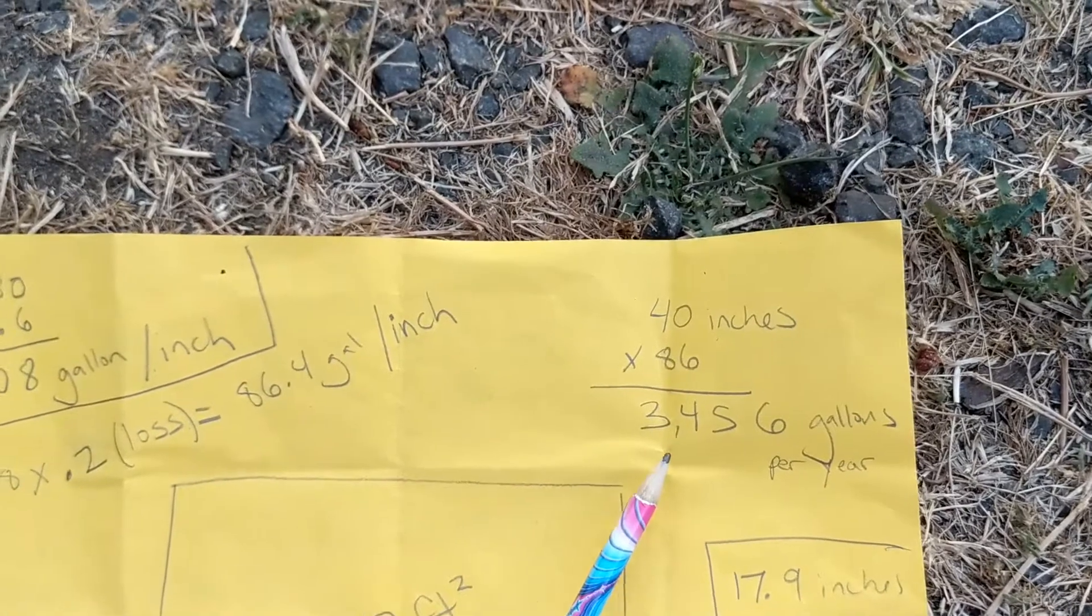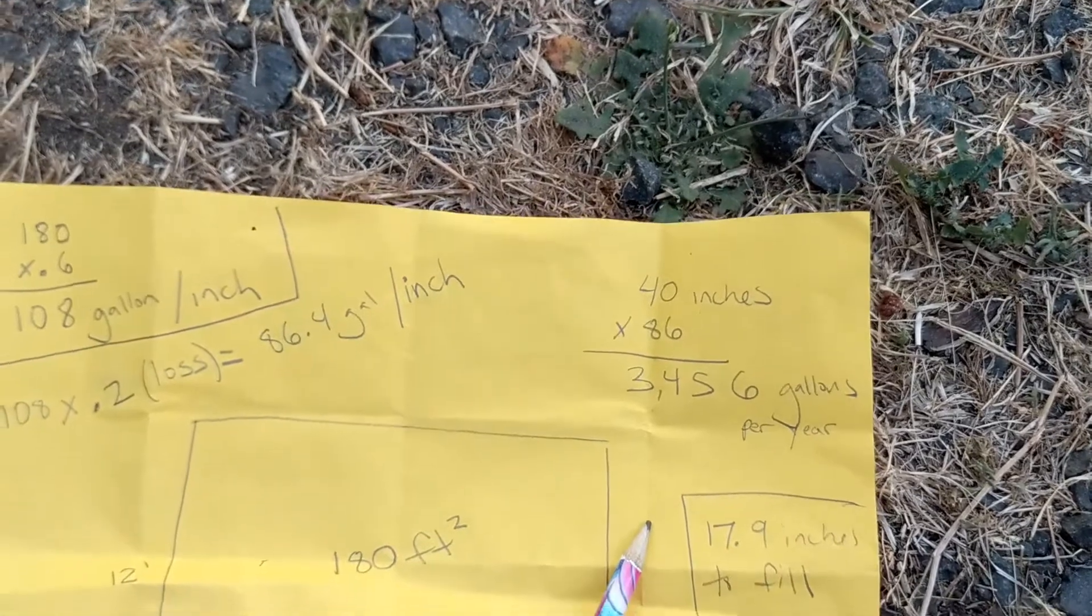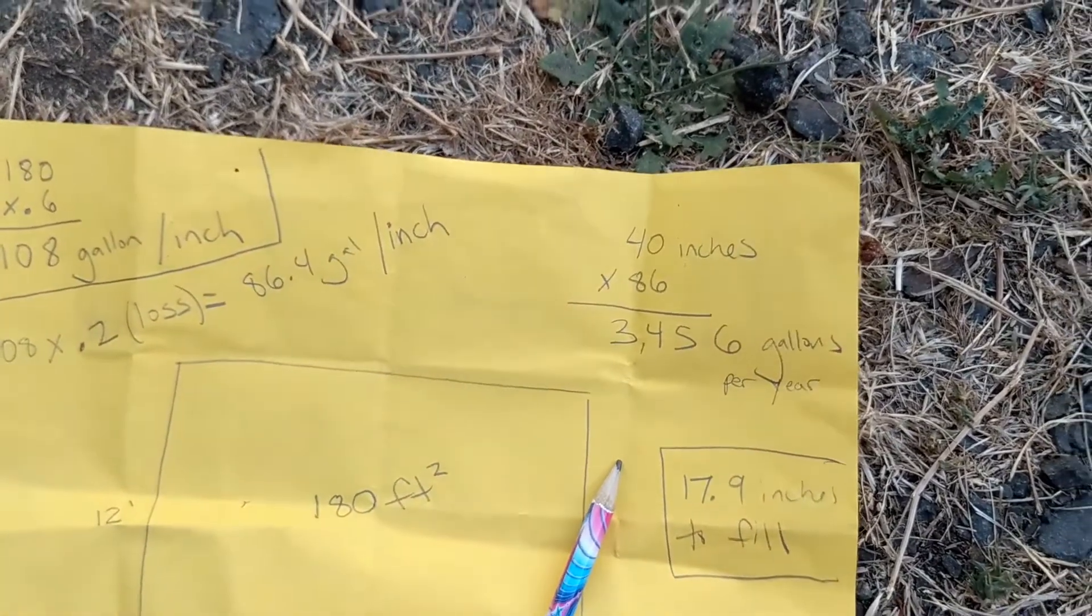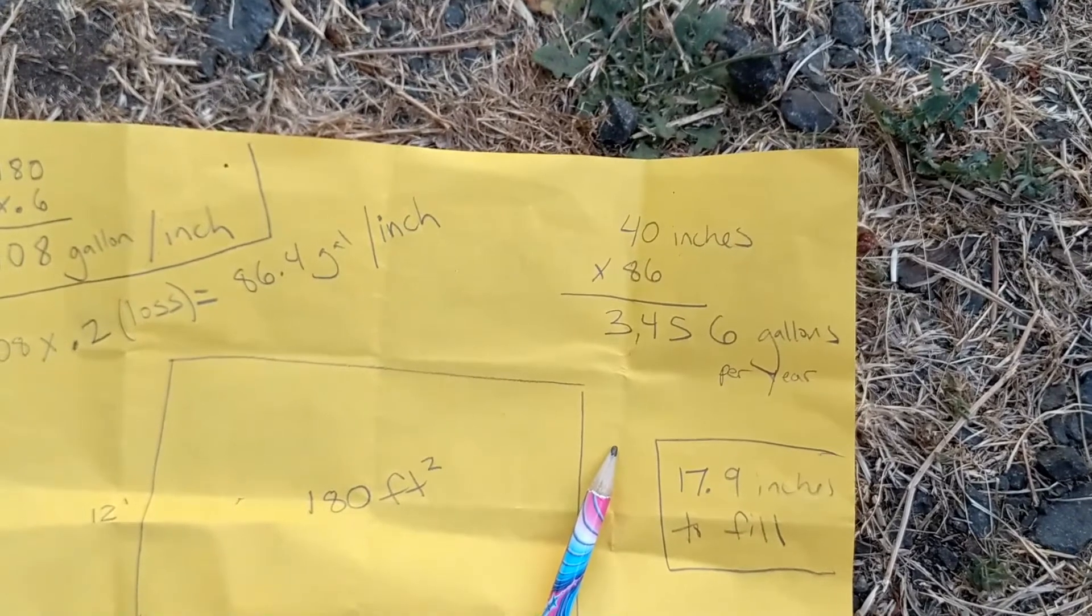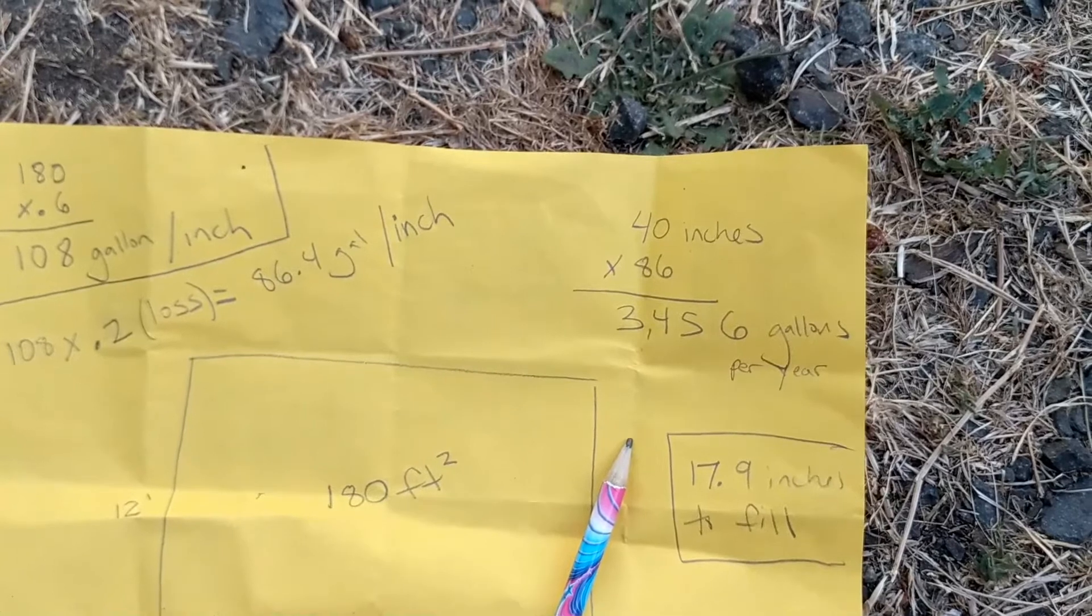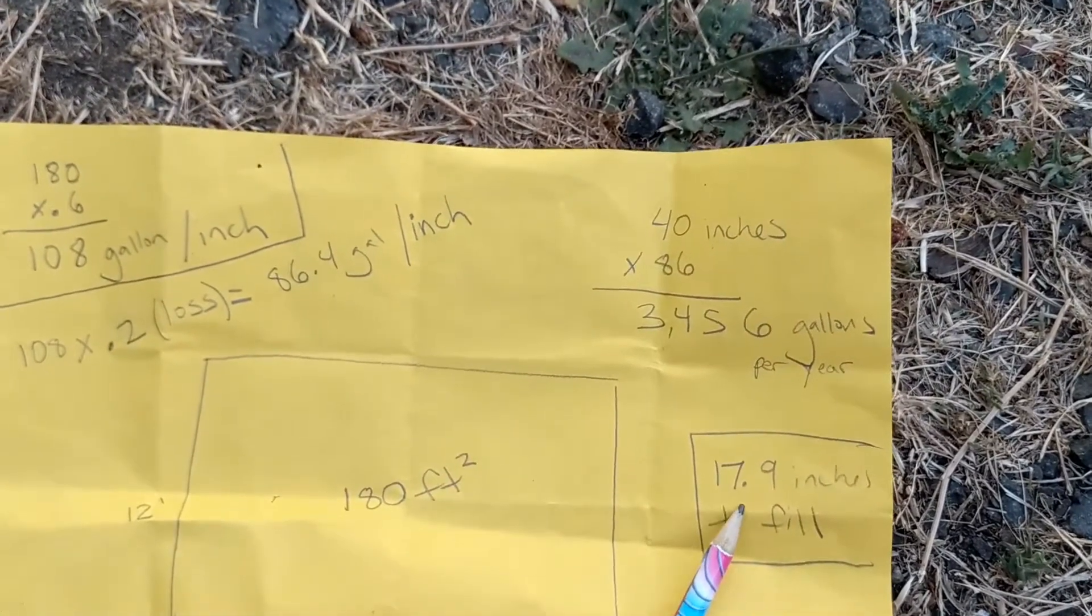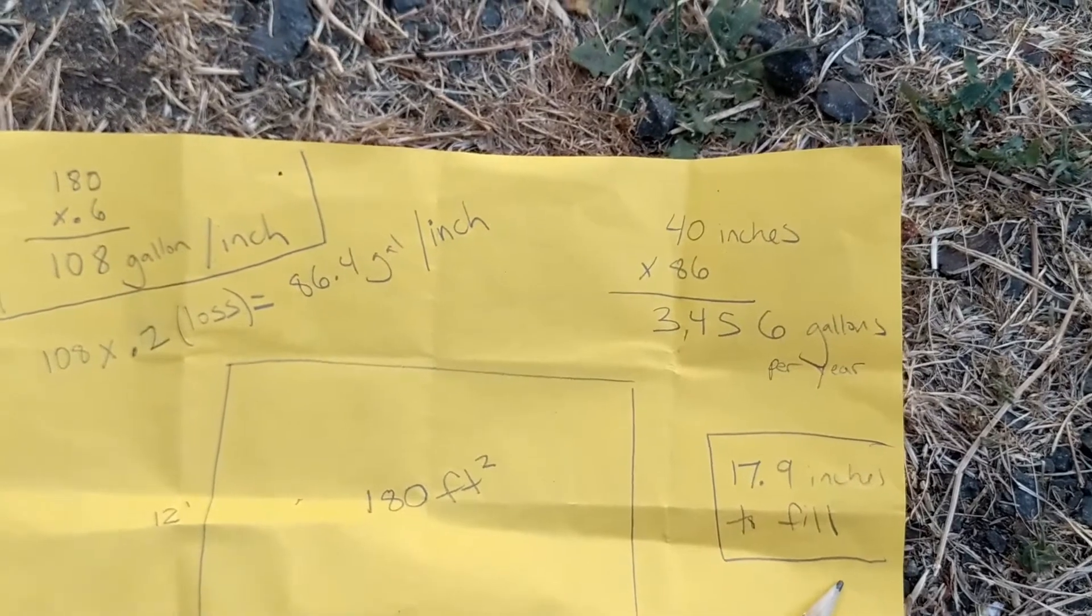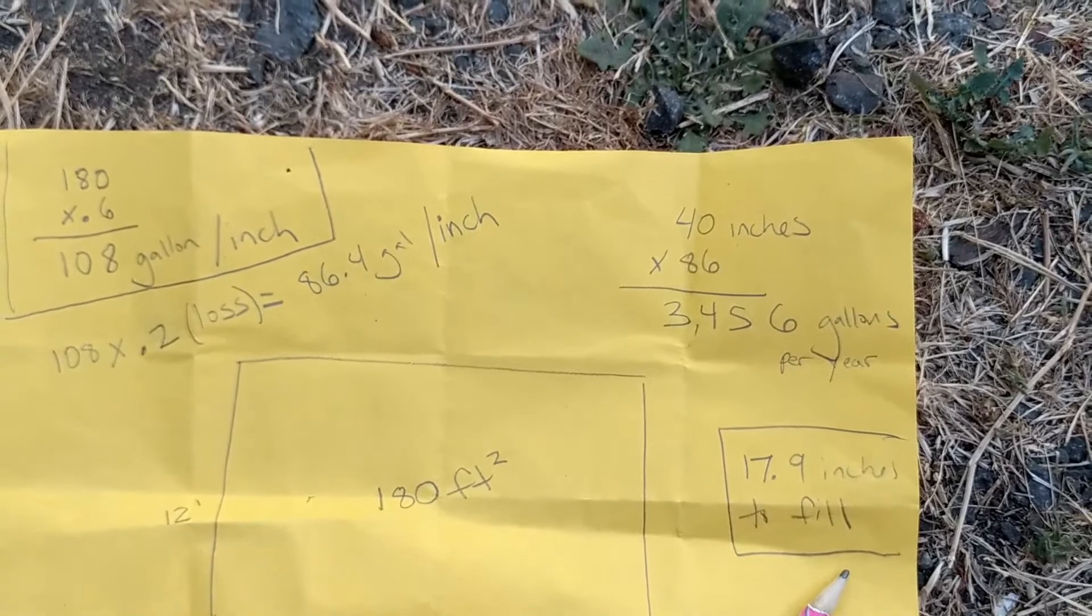And then the very last thing we did. Y lo último que hemos hecho aquí. Was figure out how many inches of rain would it take to fill the tank. Fue calcular cuántas pulgadas de lluvia se necesitan para lograr llenar el tanque. Y calculamos que iban a ser 17.9 pulgadas.